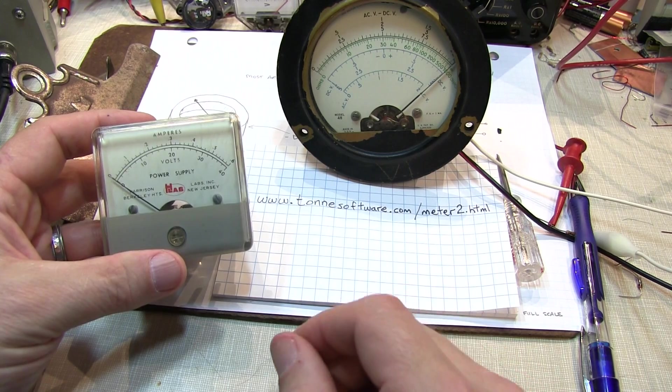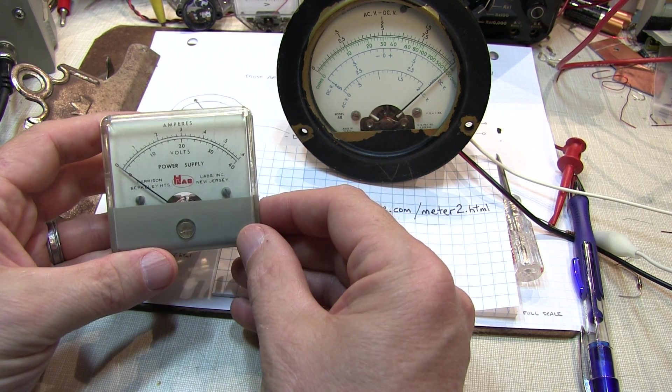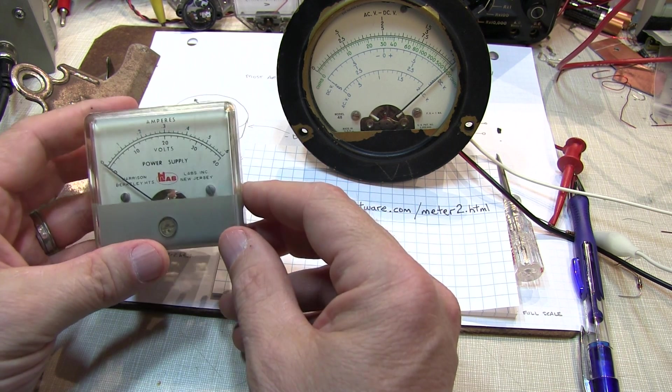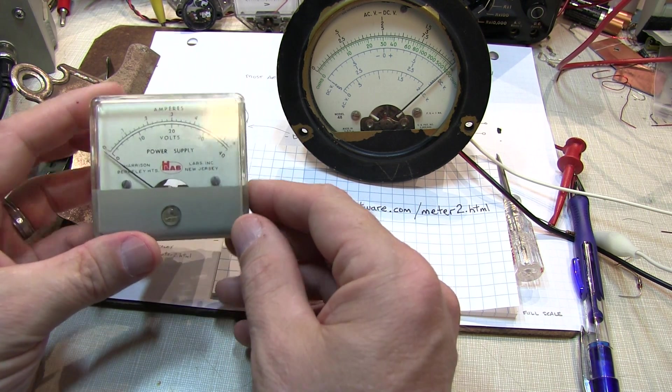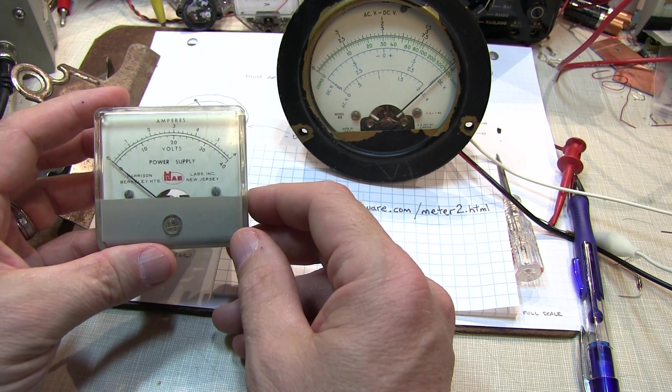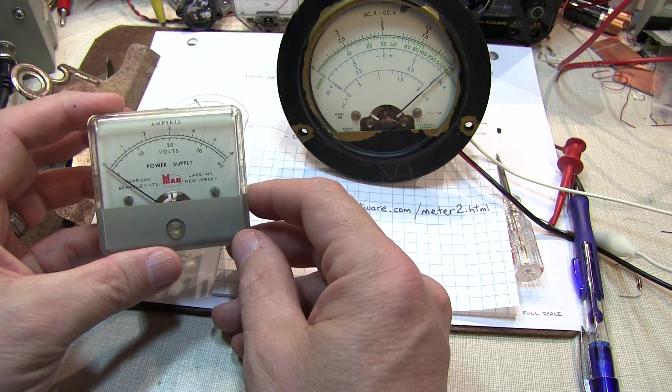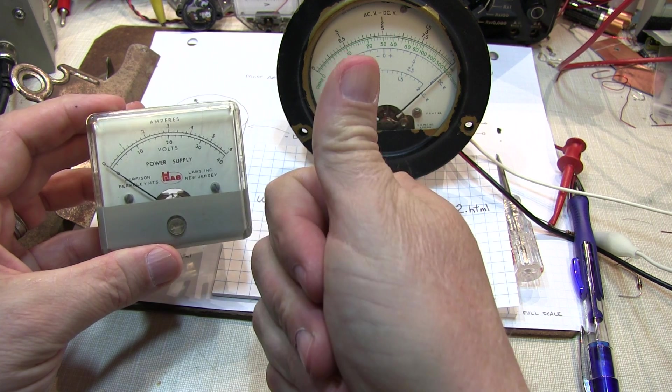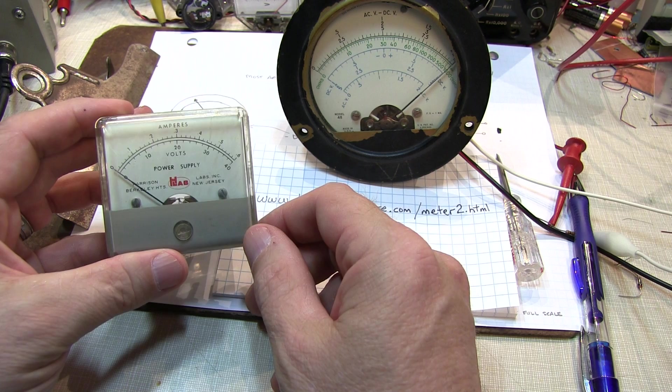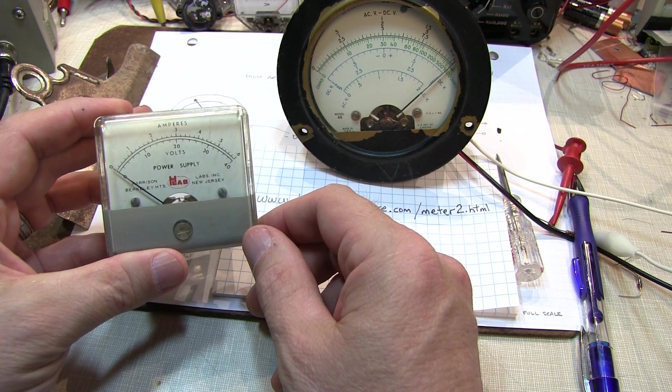I hope you learned a little something about these D'Arsonval type analog meter movements and how they're put together, how they're used, and how you go and test them and even modify them for a project that you might be working on. Thanks again for watching. Give me a big thumbs up on the video if you like it. If you haven't subscribed already, please do so and tell your friends. And we'll look for you again next time.